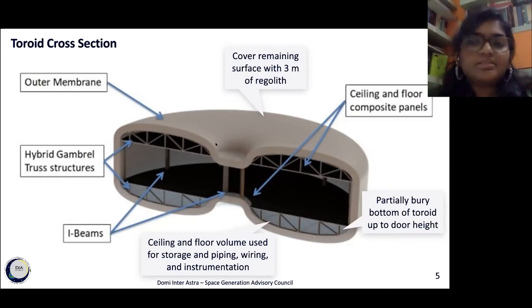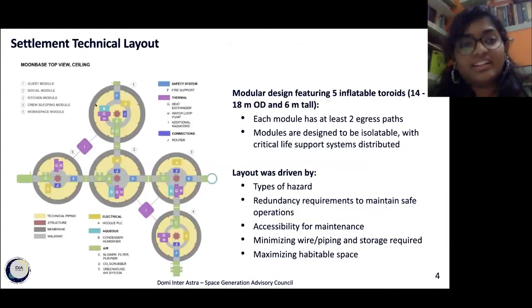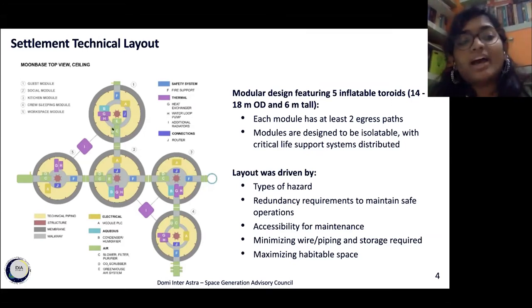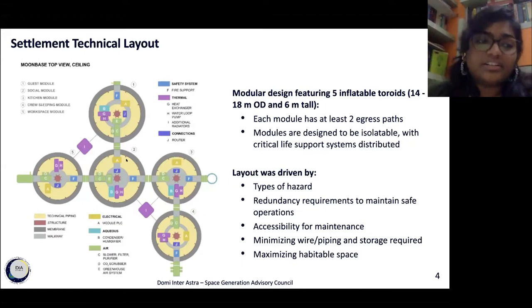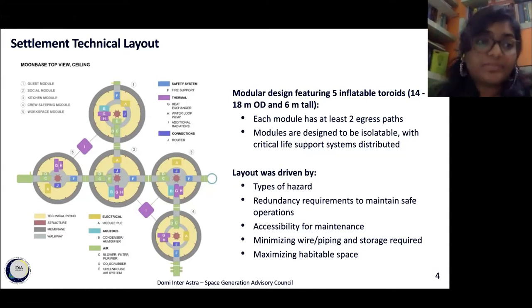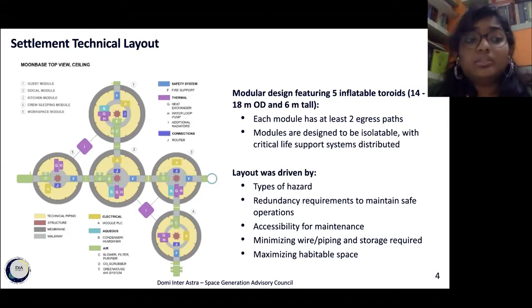Let's take a look at how all of these modules are connected together. This image shows the technical layout of the base. Equipment is installed in the ceilings and floors, concentrated above and below walkways. Critical life support systems are present in every module. We also have LAN to allow communication between all the various modules. This layout was defined by the types of hazards, accessibility for maintenance, minimizing storage required, and maximizing habitable space to make it more comfortable for crew and tourists.